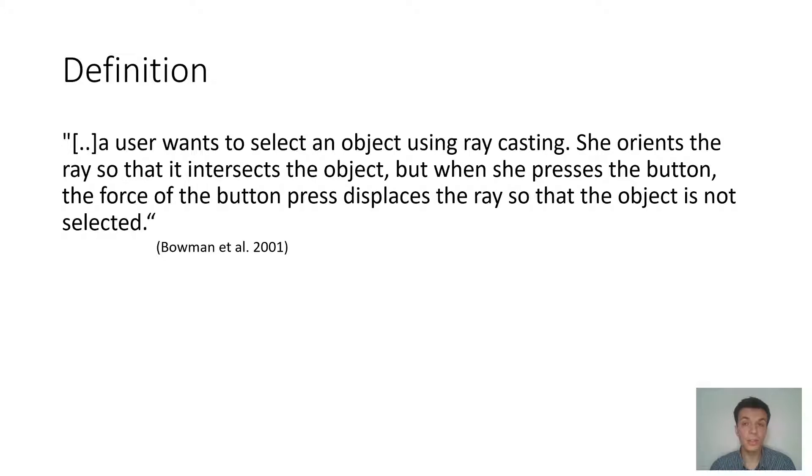The term Heisenberg Effect of Spatial Interaction was beautifully coined by Doug Bowman. The definition is that a user wants to select an object using ray casting, she orients the ray so that it intersects the object, but when she presses the button, the force of the button press displaces the ray so that the object is not selected.